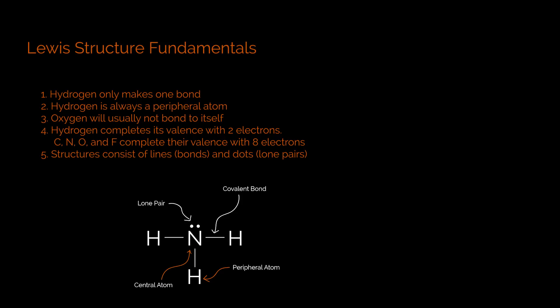The last rule that we're going to talk about right now is simply that when we draw these structures, a line is going to represent two shared electrons. So a line is simply a covalent bond. On the other hand, we're going to have dots on our structure, and those dots are going to represent lone pair electrons. In other words, they're electrons that are not shared. Rather, they're just hanging out on one of the atoms in the structure.